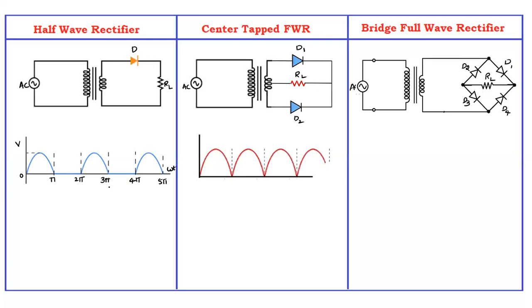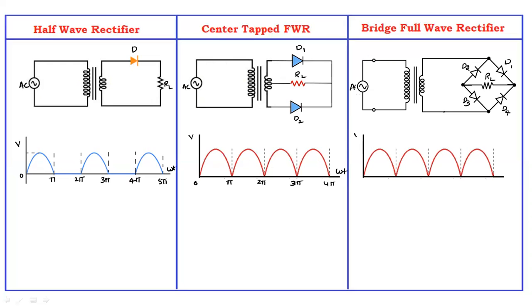In the center tapped full wave rectifier, both the positive and negative half cycles are processed to the output. From 0 to π it is conducting, and from π to 2π it is also conducting, and so on. The bridge full wave rectifier waveform is the same — both positive and negative half cycles are processed to the output. That is why they are called full wave rectifiers.